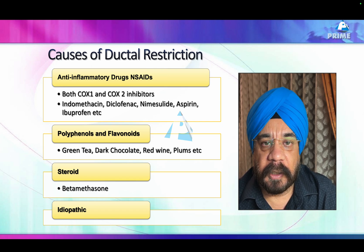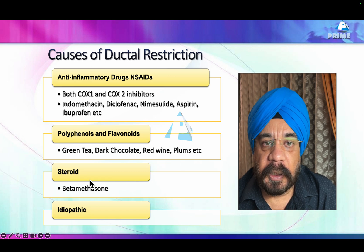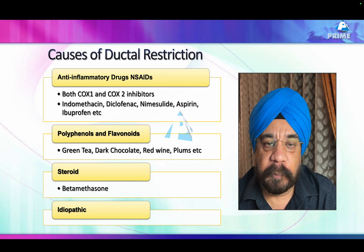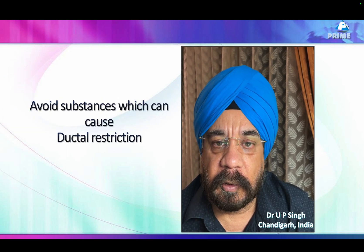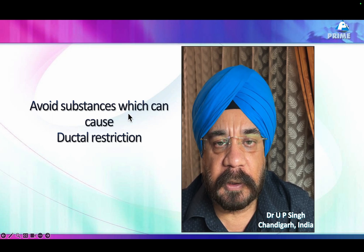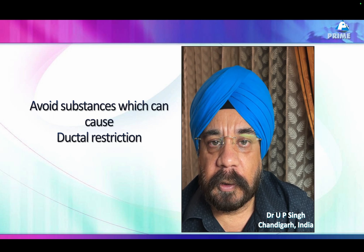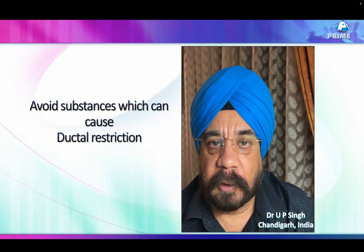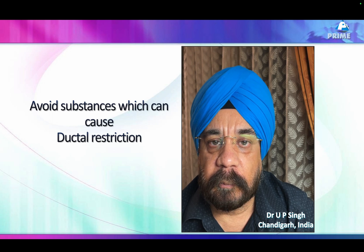The list of substances that can produce ductal restriction includes all anti-inflammatory drugs, polyphenols, green tea, dark chocolate, red wine, and plums. Steroids can also cause it, and there are anecdotal reports of two cases where even paracetamol produced ductal restriction. Please carefully counsel pregnant mothers to avoid substances likely to produce ductal restriction. If you are aware of these risks, you will be able to caution your pregnant patients appropriately. Thank you for watching — please consider subscribing to the channel to be notified of new posts.